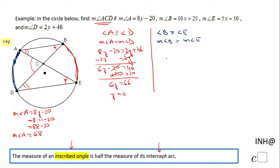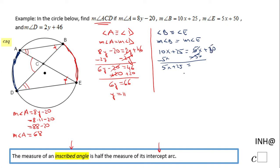Setting angle B equal to angle E: 10x plus 25 equals 5x plus 50. Subtracting 5x from both sides gives 5x plus 25 equals 50. Subtracting 25 from both sides gives 5x equals 25. Dividing by 5 gives x equals 5.